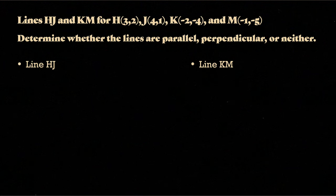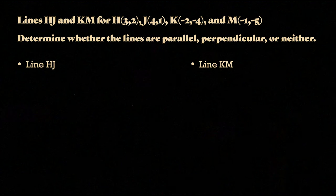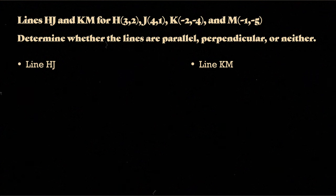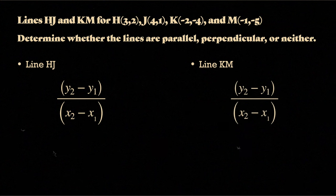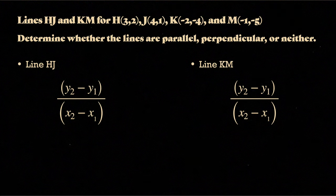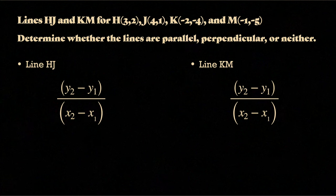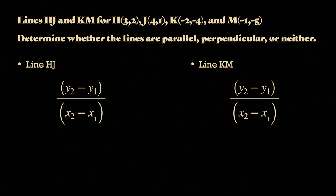All right, so in this case, we have lines HJ and lines KM. In this case, H is at 3, 2. J is at 4, 1. K is at negative 2, negative 4, and M is at negative 1, negative 5. We are determining whether these lines are parallel, perpendicular, or neither. So what we are going to do here is we are going to find both slopes. So for both of them, we're going to use the same formula, y2 minus y1. So for my purposes, J is going to be 0.2 and M is going to be 0.2. So when I plug them in, y2 is 1 minus y1 is 2 for HJ.